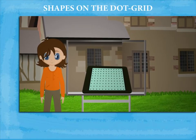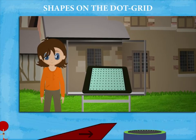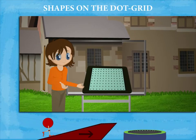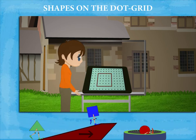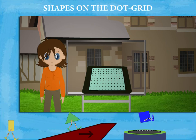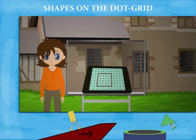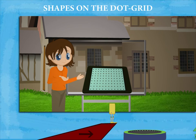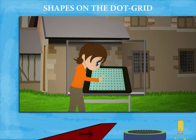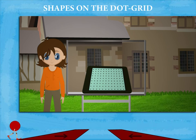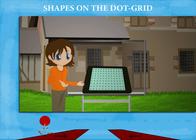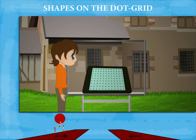Shapes on the dot grid. Tim has a dot grid on which he draws a four-lined shape with equal sides — this is a square. He now draws a three-lined shape called a triangle.